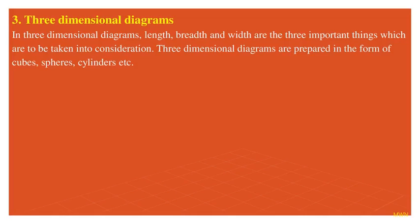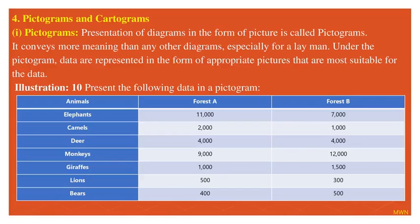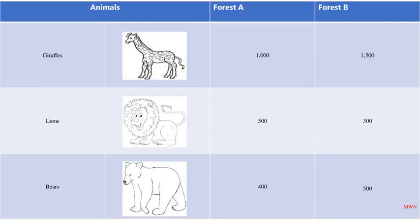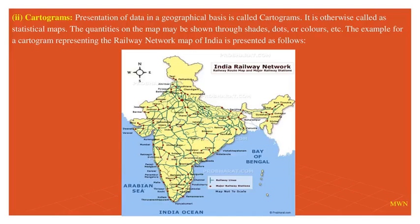Pictogram and cartogram: pictogram means data given in the form of pictures. Here we have taken animals in two forests. The number of animals recorded from surveys is represented in the pictogram. Pictures are there, so one can get a clear idea. You can easily find giraffes, lions, bears, camels, deer, and monkeys in Forest A and Forest B and how they are recorded.